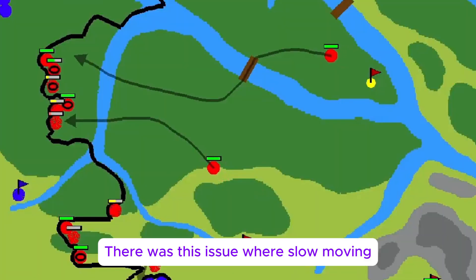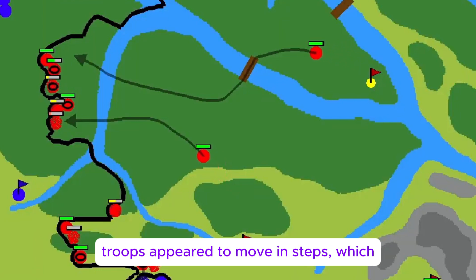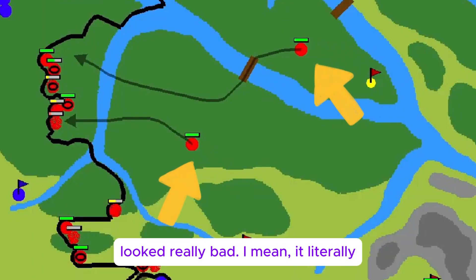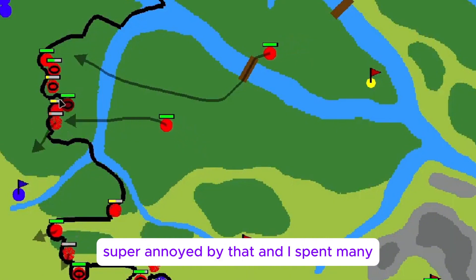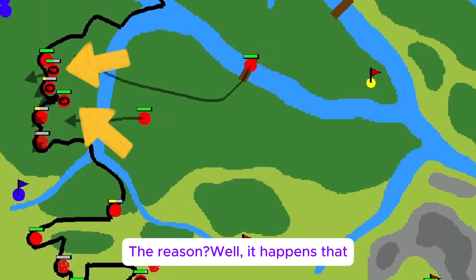There was this issue where slow-moving troops appeared to move in steps, which looked really bad. I mean, it literally looked like the game was lagging. I was super annoyed by that, and I spent many hours trying to fix it. Nothing worked. The reason?